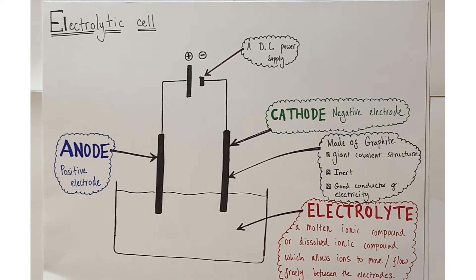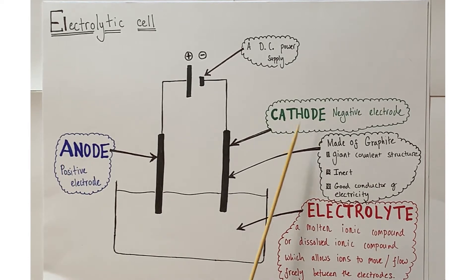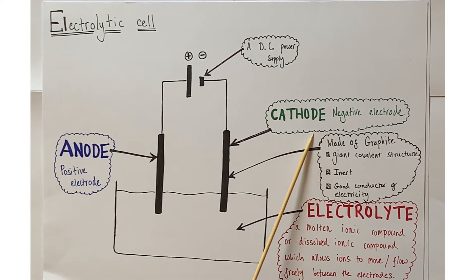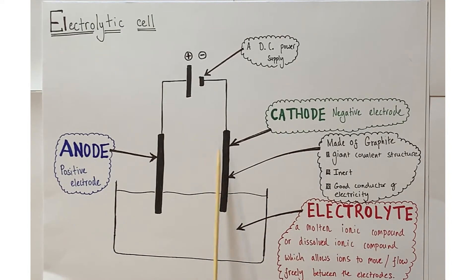The electrodes are given specific names linked to their function. The positive electrode, which attracts anions towards itself, is named the anode. The negative electrode, which attracts positive ions towards itself during electrolysis, is called the cathode — because it attracts cations.